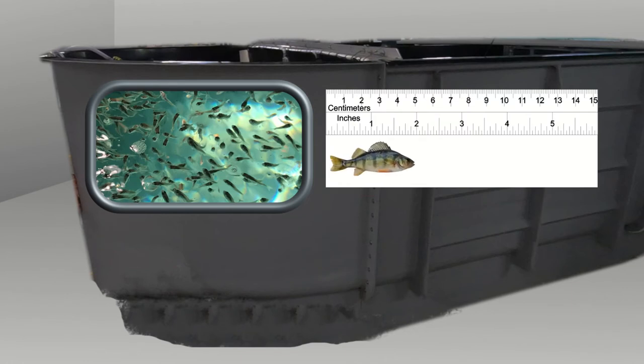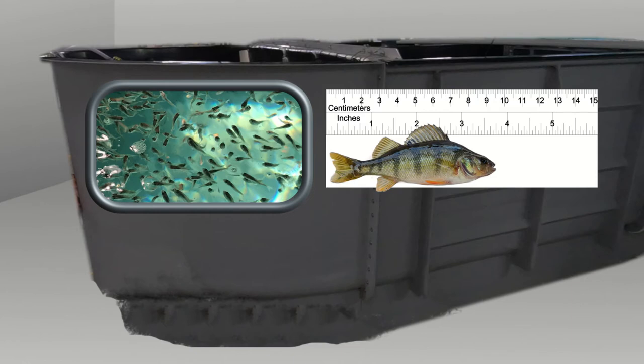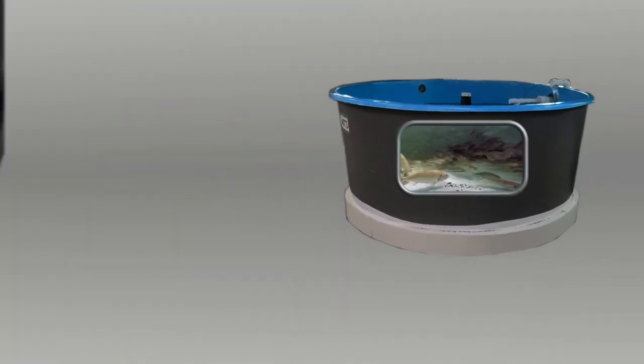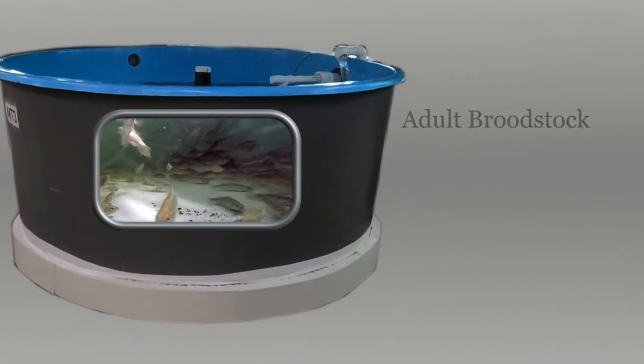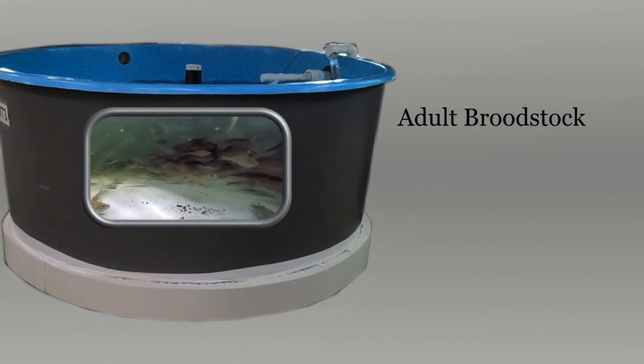They grow about 1 inch per month. At that point, they will be sold to fish farms. Some of the perch fingerlings will be transferred to tanks for raising to adults as broodstock for laying and fertilizing more eggs.